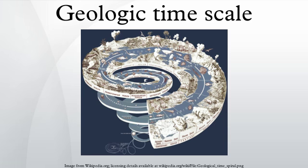The identification of strata by the fossils they contained, pioneered by William Smith, Georges Cuvier, Jean d'Omalius d'Halloy, and Alexander Brongniart in the early nineteenth century, enabled geologists to divide Earth history more precisely. It also enabled them to correlate strata across national boundaries.